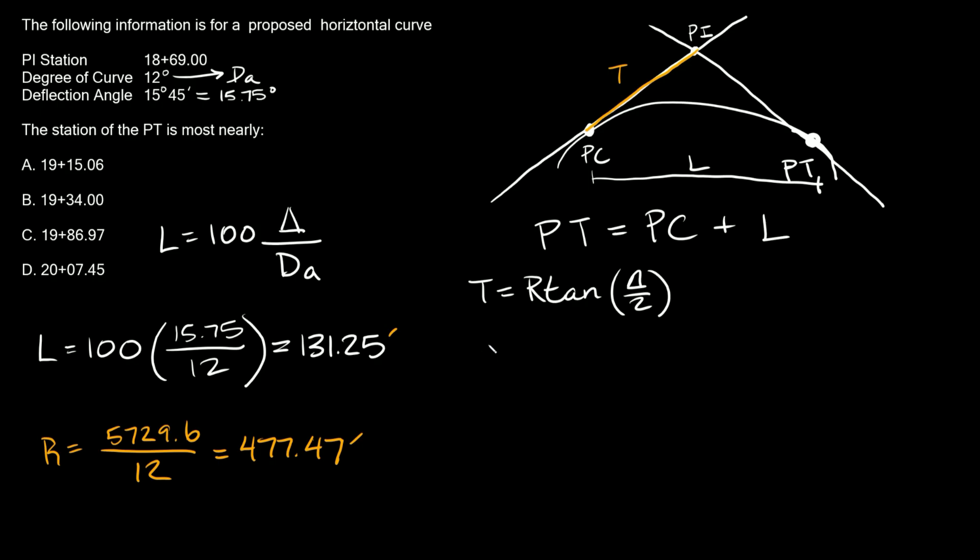So now that we know our radius, let's plug it in. So we're going to get that the tangent is equal to 477.47 times the tangent of delta, which again is 15.75 and that's over 2. So when you plug this all in, you're going to get that tangent is equal to approximately 66.04 feet. So that's the distance from the PI to the PC.